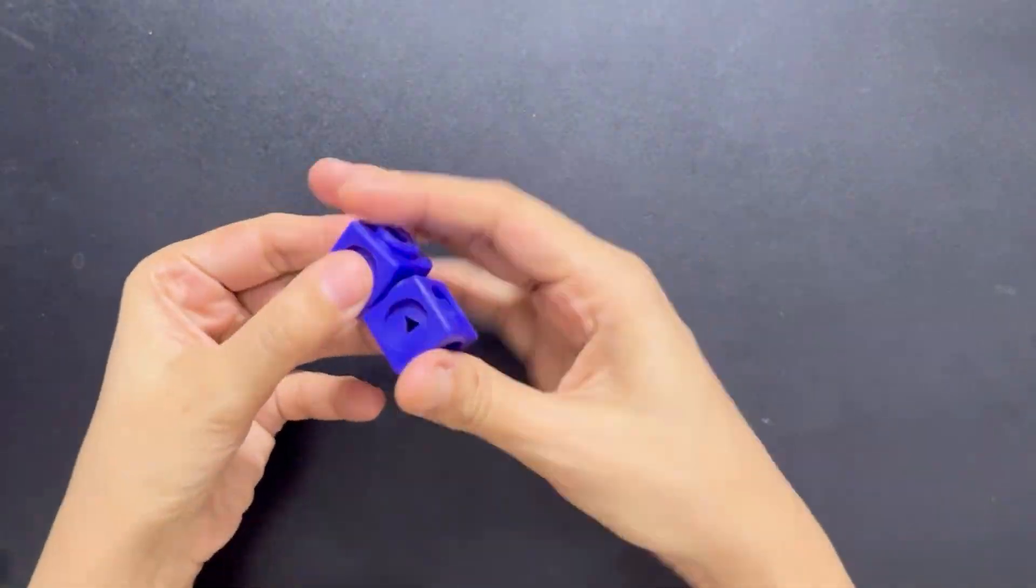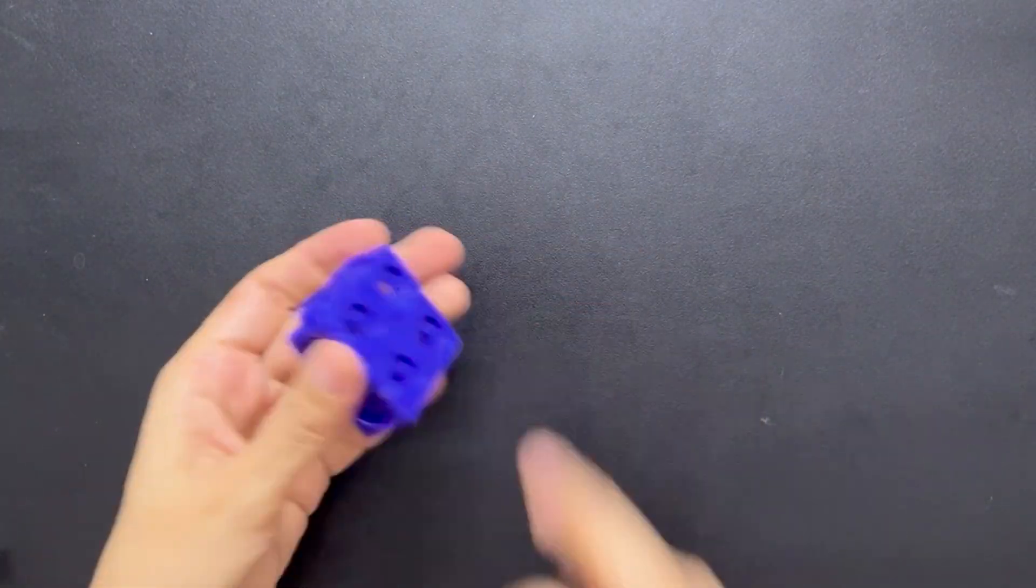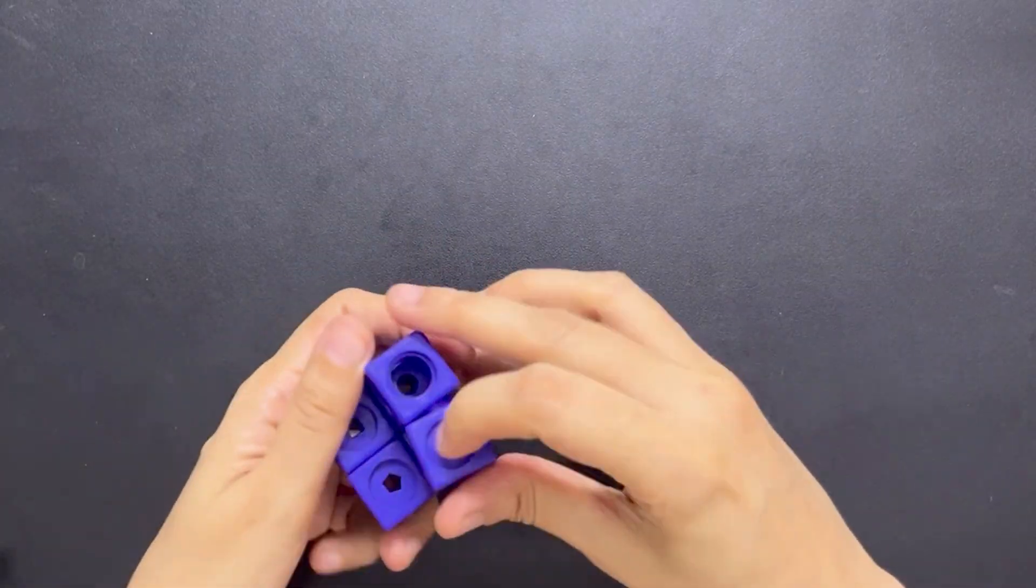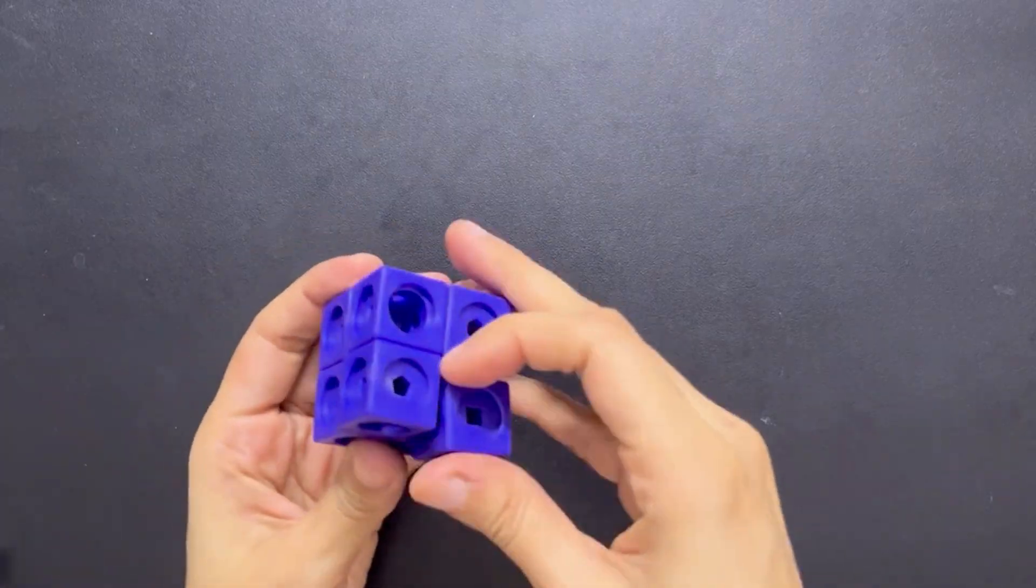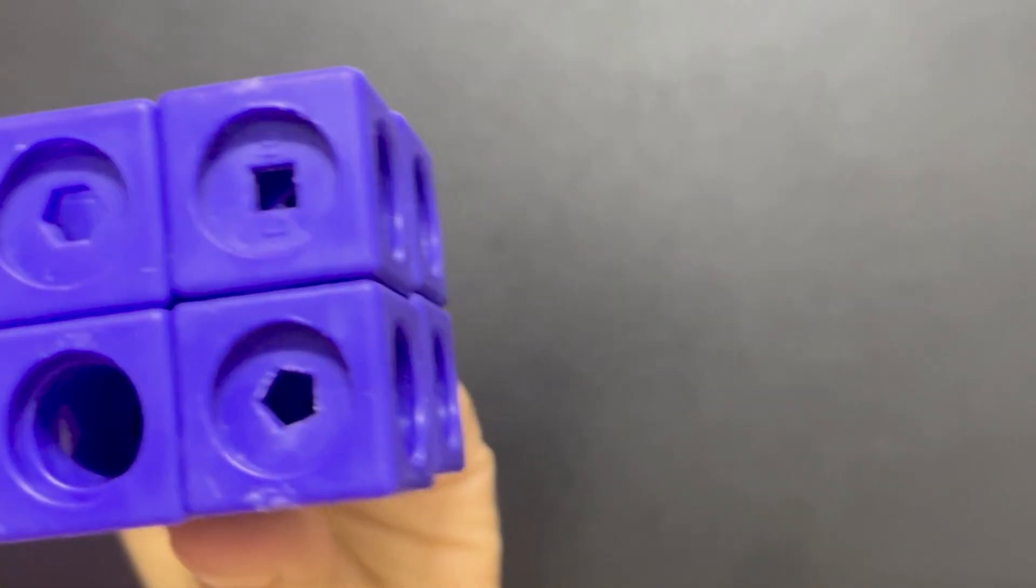The fifth opposite we will learn are far and near. I'm making a cube from purple colored number blocks. After that, I'll show you the concept of being far and near. I'll move the cube close to the camera to show that it's near, and take it away to show it's far.